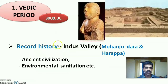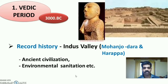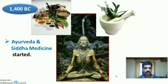The Vedic period dates to 3000 BC. The historical record of the Indus Valley civilizations — Mohenjodaro and Harappa — revealed that ancient people followed ancient civilization practices and environmental sanitation. During 1400 BC, Ayurveda and Siddha medicine were started in India.